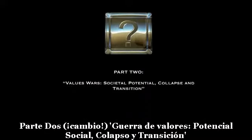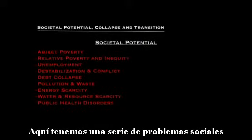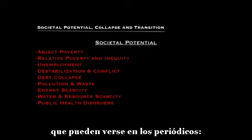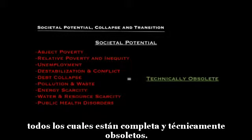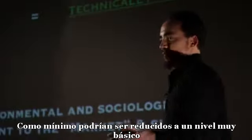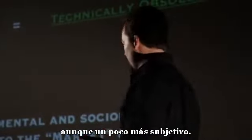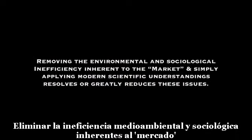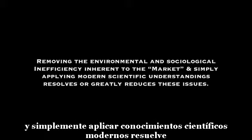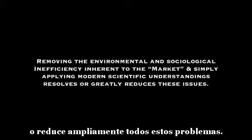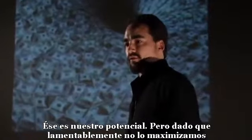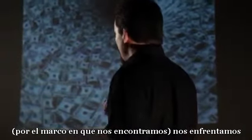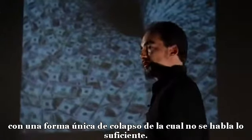Part two: change, value wars, societal potential collapse and transition. Here is a series of social problems you would see in the newspapers: abject poverty, unemployment, destabilization, debt collapse, pollution, and waste — all of which are completely technically obsolete. None of them have to exist at all. Removing the environmental and sociological inefficiency inherent to the market and simply applying modern scientific understandings resolves or greatly reduces all of these issues. That is our potential, and since we don't maximize that potential because of this framework we're in, we're faced with a unique form of collapse that many are not talking about enough.